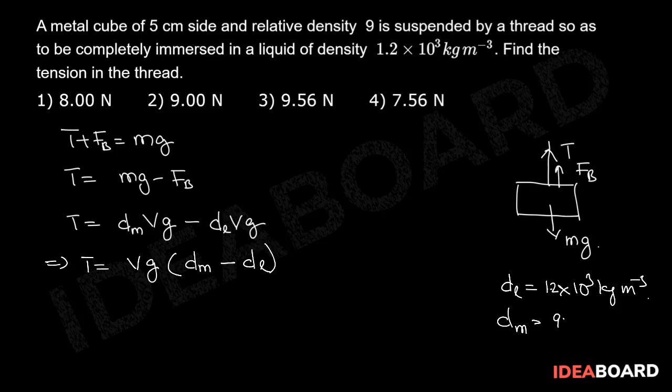Volume is equal to 5³ × 10⁻⁶ m³. By substituting these values in the equation, T equals 125 × 10⁻⁶ × 10 × (9 - 1.2) × 10³.